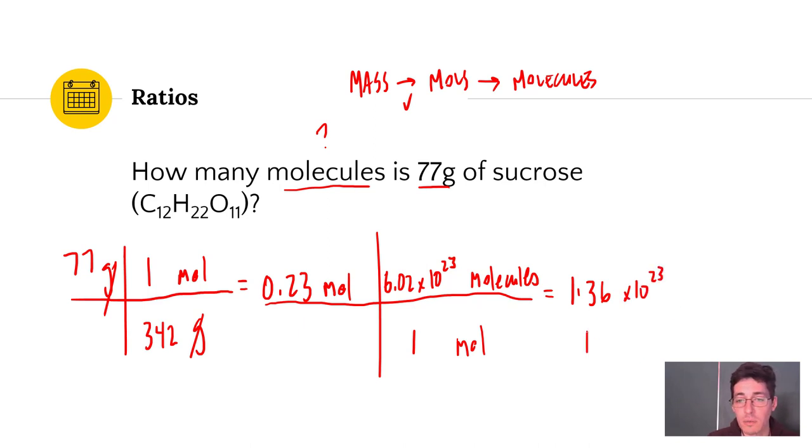We have 1.36 times 10 to the 23rd power. Your calculator might show 1.36E23. They mean the same thing. And this is molecules, because moles have canceled. Moles are gone. Molecules. So we have taken this quantity, 77 grams, converted it to moles, and then converted it to molecules.